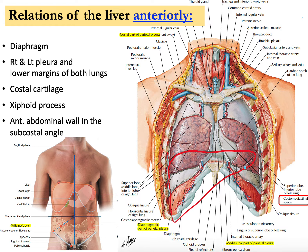Now let us see what structures are located anterior to the liver. First of all, you can see the lower parts of both lungs — this is the right lung and this is the left lung. Look at the lower margin of both lungs, which is located anterior to the liver.